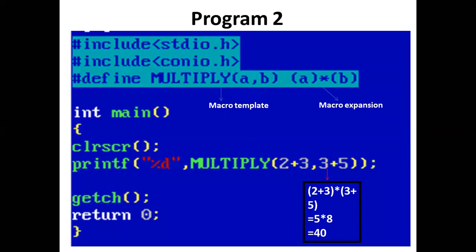Now whenever we write MULTIPLY(a,b), it will be replaced by (a)*(b).